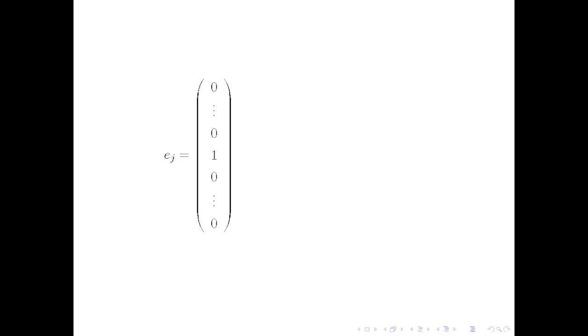All components of a unit basis vector equals zero, except for one component, which equals one. The jth unit basis vector has this one in its jth component, where we start indexing at zero.